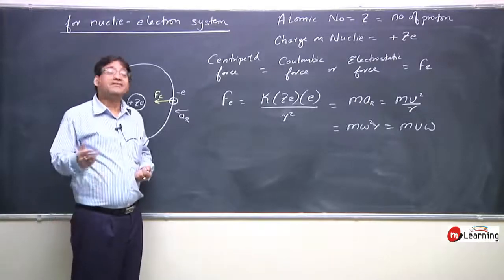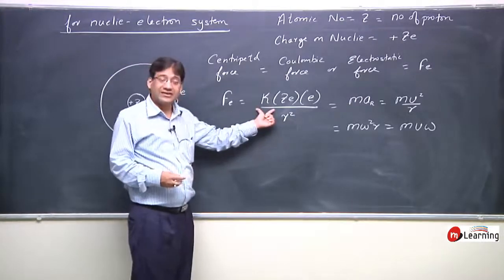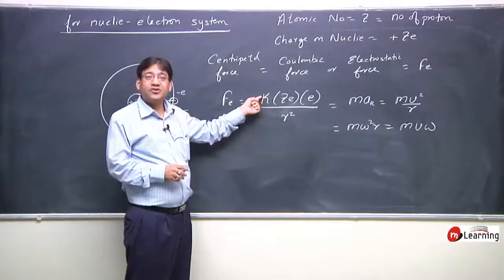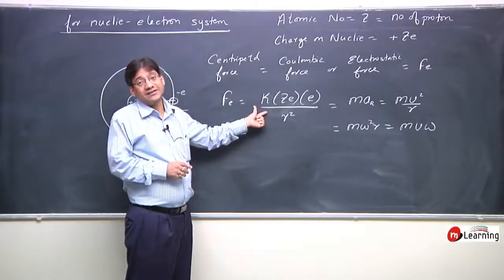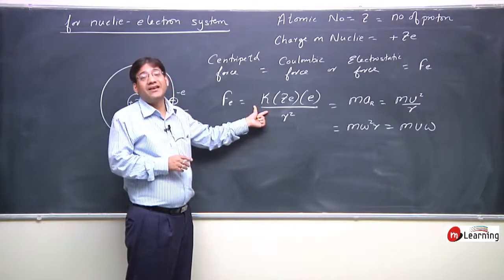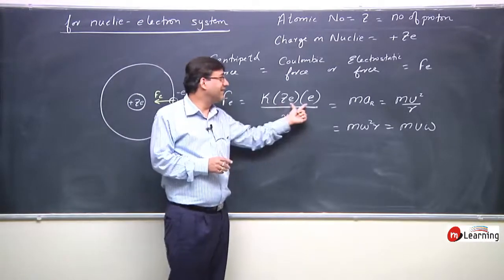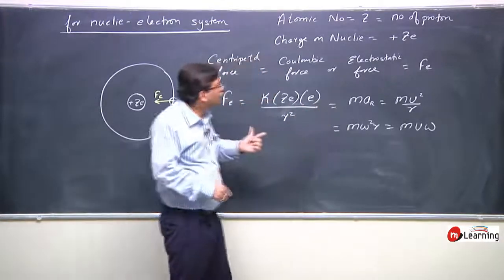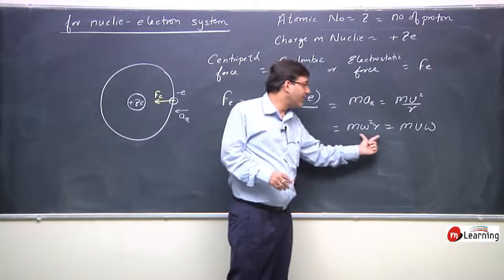In the nuclear-electron system, the centripetal force is written as before. Here k is a constant that we will study in detail in class 12 in electricity. The electrostatic force equals kZe²/r², providing the necessary centripetal force equal to mass times acceleration radially inward, MV²/R, and M omega squared R.